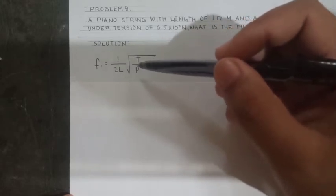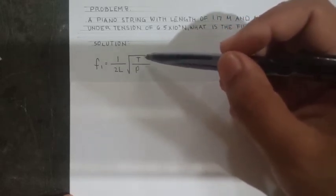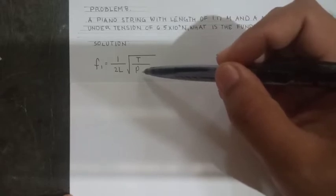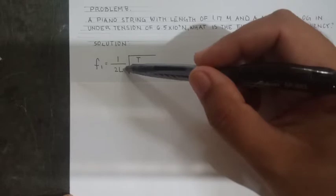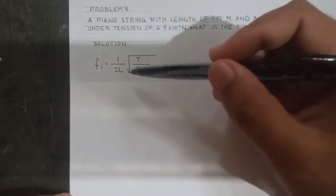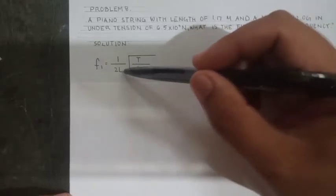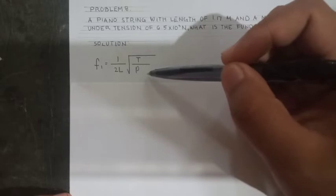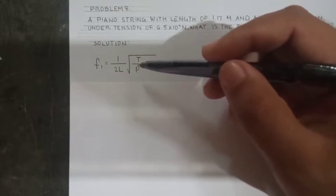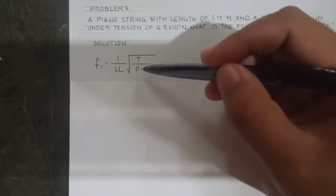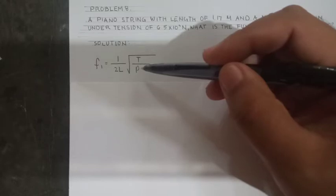It's 1 over 2L, square root of T over μ. This is the length of the string or chord. And μ is mass over length. This is the mass.